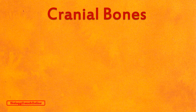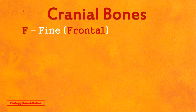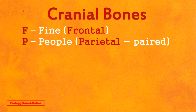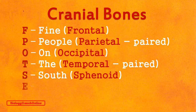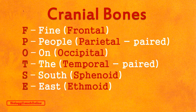That wraps up the cranial bones. Many students make up little mnemonics to help them remember various anatomic structures. Here's one for the cranial bones: taking the first letter of each — F for frontal, P for parietal, O for occipital, T for temporal, S for sphenoid, and E for ethmoid — we get the mnemonic: 'Find People On The Southeast.' Frontal, parietal, occipital, temporal, sphenoid, ethmoid.